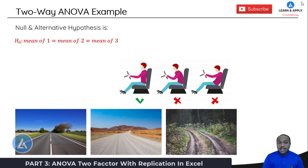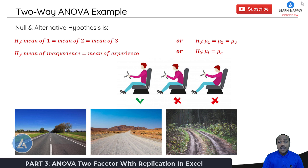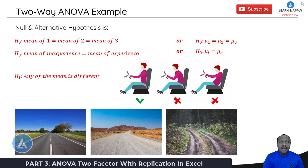The null hypothesis H₀ states: mean of road 1 equals mean of road 2 equals mean of road 3 — that is, number of corrections on each road type are equal, or μ₁ = μ₂ = μ₃. A second null hypothesis for the driver experience factor states: mean of inexperienced equals mean of experienced, or μᵢ = μₑ. The alternative hypothesis H₁ states that any one of the means is different.